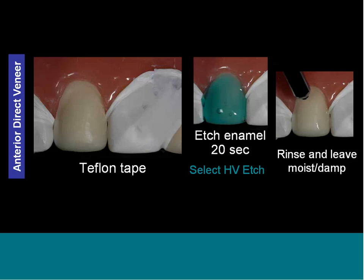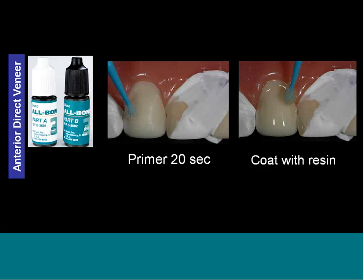Isolate the adjacent teeth using Teflon tape — you can get a spool at a hardware store for a couple of dollars that will last half your career. This isolates adjacent teeth so they don't get etched or get adhesive on them. Etch the tooth for 20 seconds using Select HV, rinse it off, and then apply Allbond III — primer and then resin. The resin is air-thinned and should look real shiny when done, then light cured. Since then, Allbond TE has come out in the ACE dispenser, which you could also use.